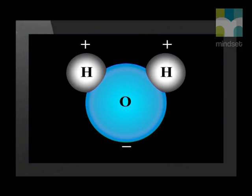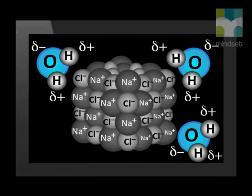Now let's look at what happens when an ionic solid is added to water. We know that the water molecule is a polar molecule with slightly positive and slightly negative ends. When we add an ionic compound such as sodium chloride (NaCl) to water, forces of attraction develop between the polar water molecules and the Na⁺ and Cl⁻ ions. Notice how the H side of the water molecule is attracted to a Cl atom and the O side of another water molecule is attracted to a Na atom.